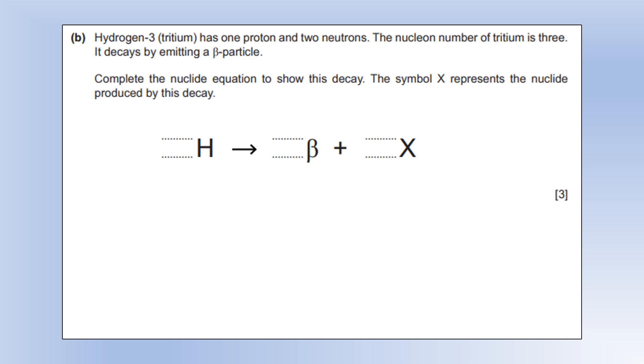Hydrogen-3, also known as tritium, has one proton and two neutrons. The nucleon number of tritium is 3, and it decays by emitting a beta minus particle. Complete the nuclear equation to show this decay. Tritium is going to be 3 and 1. A beta particle has no nucleons and has a charge of minus 1, and that means element X must have three nucleons and must have a charge of two, so the charge is balanced.